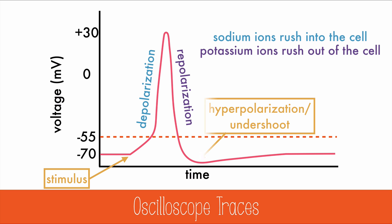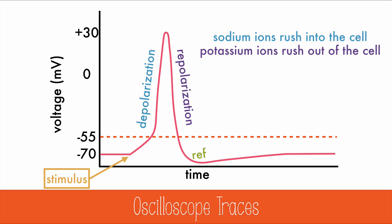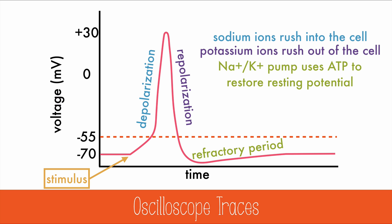This will be corrected during the refractory period, where the sodium-potassium pump uses ATP to restore resting potential. During this time, no additional action potentials can be sent, but once resting potential is reached, the neuron is ready to fire again.